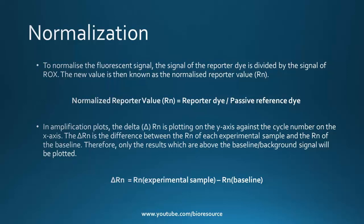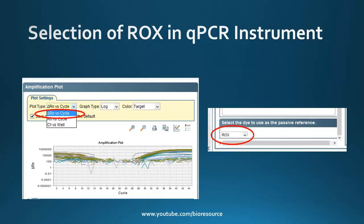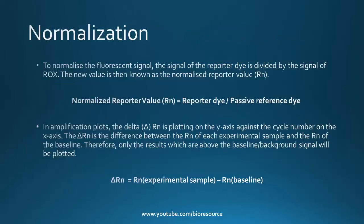In amplification plots, the delta-RN is plotted on the y-axis against the cycle number on the x-axis. The delta-RN is the difference between the normalized reporter of each experimental sample and the normalized reporter of the baseline, so only results above the baseline or background signal will be plotted.